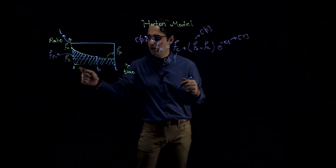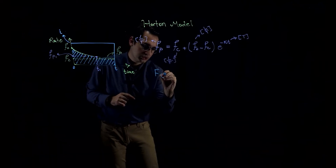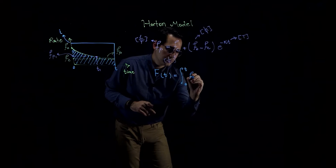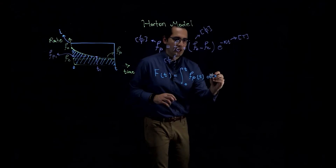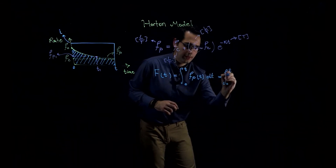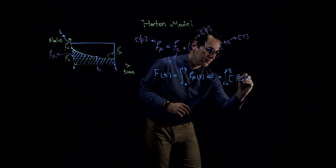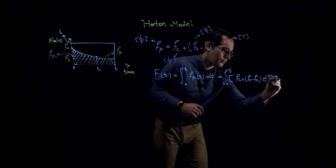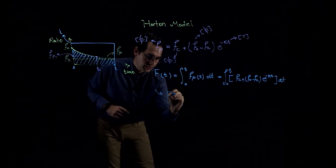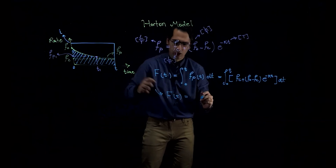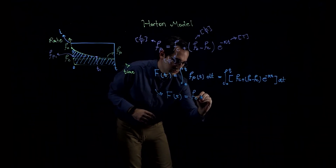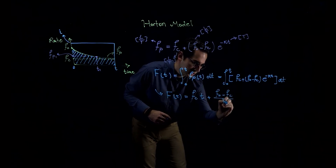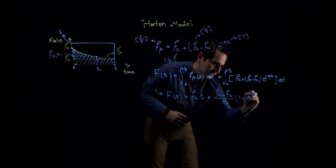I'm going to call the cumulative infiltration from time 0 to time t capital F, which is a function of time. What we are going to do is integrate from 0 to t the Horton equation — F sub p as a function of time — dt. Replacing the equation and integrating it, the cumulative infiltration F from time 0 to time t equals minimum infiltration times time, plus (initial infiltration minus minimum infiltration) divided by k, times (1 minus e to the power negative k times t).